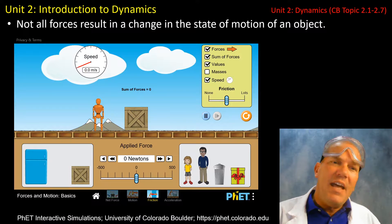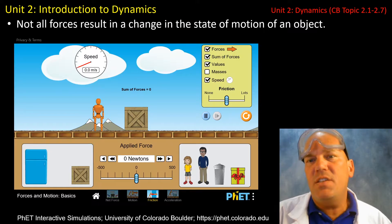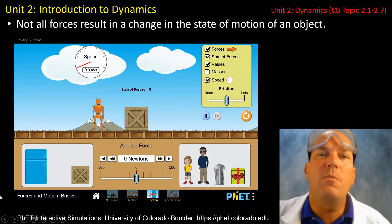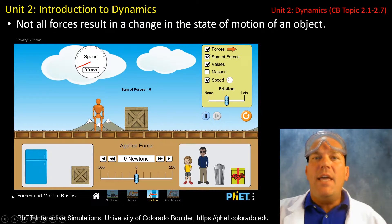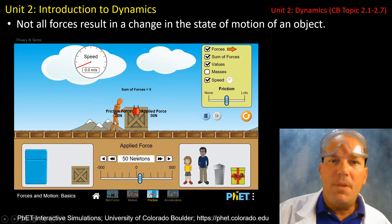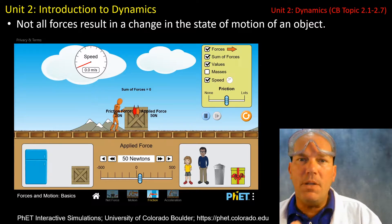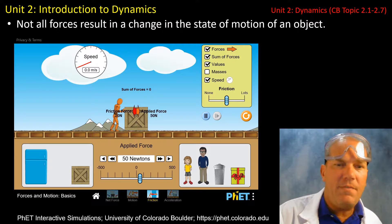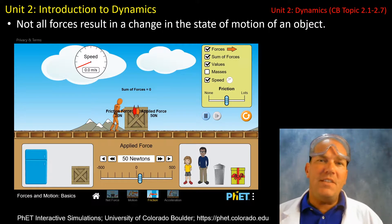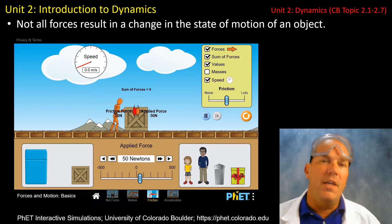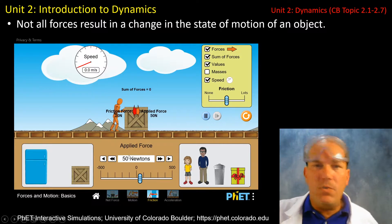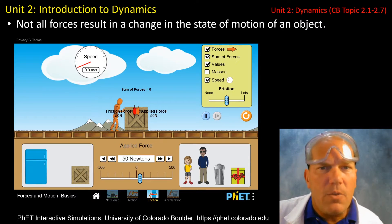Not all forces necessarily result in a change in the state of motion of an object or a system of objects. A change in state of motion is with reference to a change in both the speed and the direction, or a change in velocity. I'm going to apply a force to this crate — applying 50 Newtons to the right. But there's something else applying a force to the left, canceling out the man's 50 Newton force. That's the force of friction — the leftward force of the road onto the crate, opposing the motion. So we do not have a change in the state of motion, even though there is a force applied.